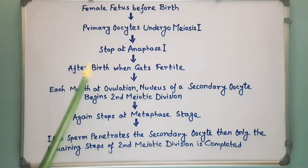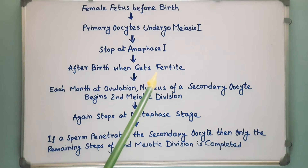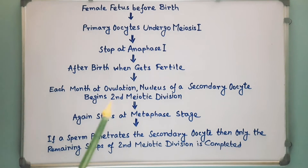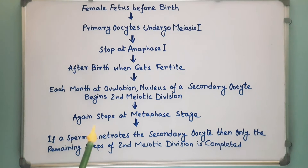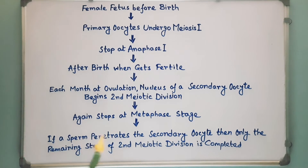After birth, when a female gets fertile, in each month at ovulation, the nucleus of a secondary oocyte begins the second meiotic division. But reaching metaphase, the division again stops. Now, if a sperm penetrates the secondary oocyte, then only the remaining steps of the second meiotic division are completed.